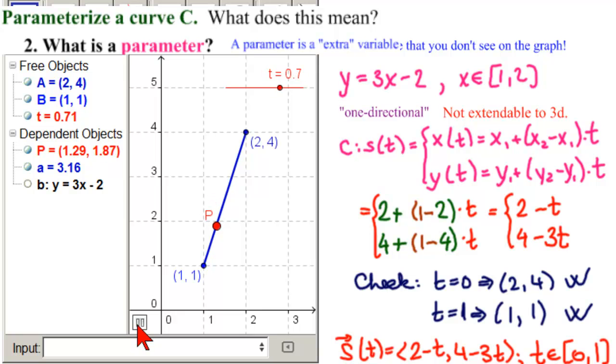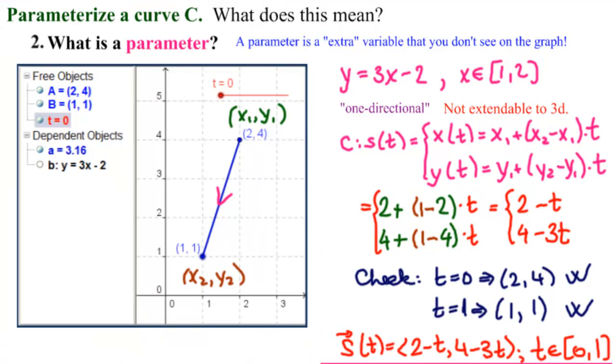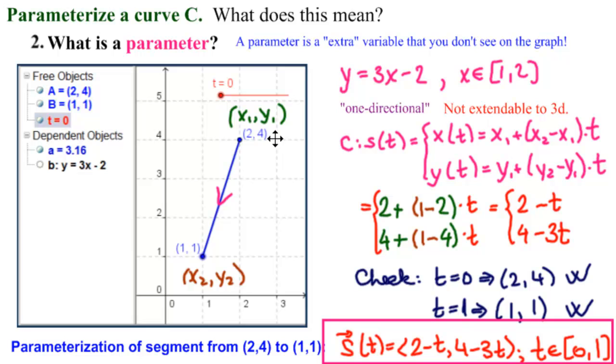And we see how parameters give us added information on the curve. So in conclusion, this information right here represents parameterization of the line segment from two, four to one, one.